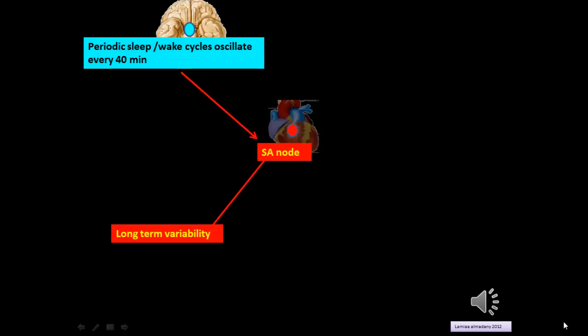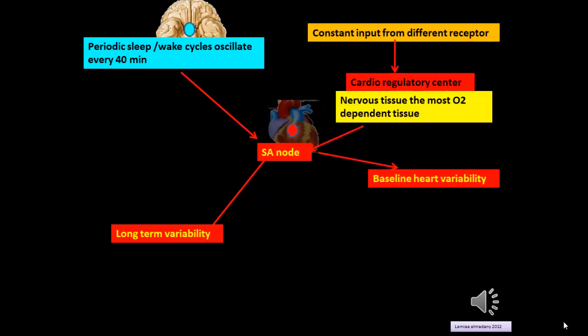The periodic sleep-awake cycle oscillation every 40 minutes will indirectly affect the SA node and result in a reduction in long-term variability. Constant input from different receptors affecting the cardioregulatory center — the most oxygen-dependent nervous tissue — leads to baseline heart rate variability.